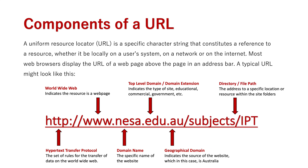This is the basic layout of a URL, but we can also have extensions placed on the back — these are the directory parts. This gets us past the home page. 'www.nesa.edu.au' would take you to the home page, but when we navigate into the website we get the directory file path coming up after it. For example, I would have clicked on a sub-page called 'subjects' and then from subjects clicked into another sub-page called 'IPT', and the web address reflects that.